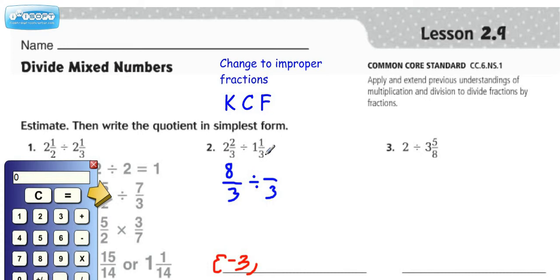Now to find the improper fraction equivalent of the divisor, we're going to do denominator times the whole number, which would be 3, and then add in the numerator, which would be 4.